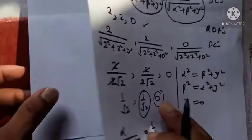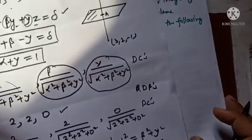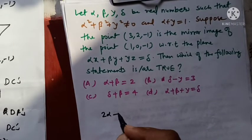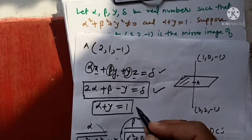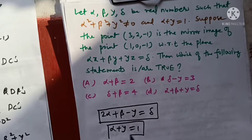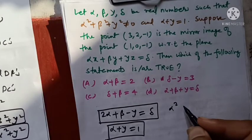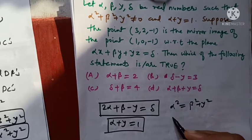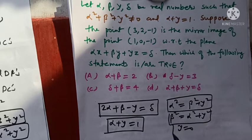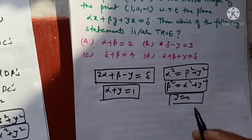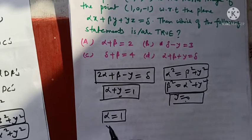So we now have 5 equations in total: (1) 2·alpha + beta - gamma = delta, (2) alpha + gamma = 1, (3) alpha² = beta² + gamma², (4) beta² = alpha² + gamma², (5) gamma = 0. Using gamma = 0 in equation (2): alpha + 0 = 1, so alpha = 1. First solution obtained: alpha = 1, gamma = 0.